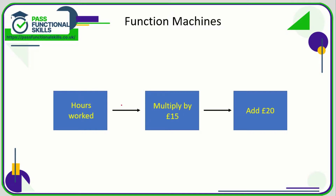Function machines are where you input one number and a different number comes out the other side. Here we have a function machine which is turning the number of hours worked into the amount of money the person will receive. There are two functions: the number is going to be multiplied by 15 and then have 20 added to it.